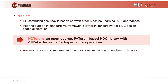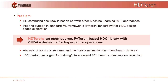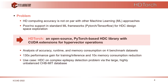We analyzed accuracy, runtime, and memory consumption on four typical benchmark datasets, and achieved significant performance gain for both training and inference, as well as significant memory reduction. We also tested it on the more demanding use case of epilepsy detection, because it represents a large and highly unbalanced dataset on which we noticed a significant drop in HD computing performance when compared to random forest.